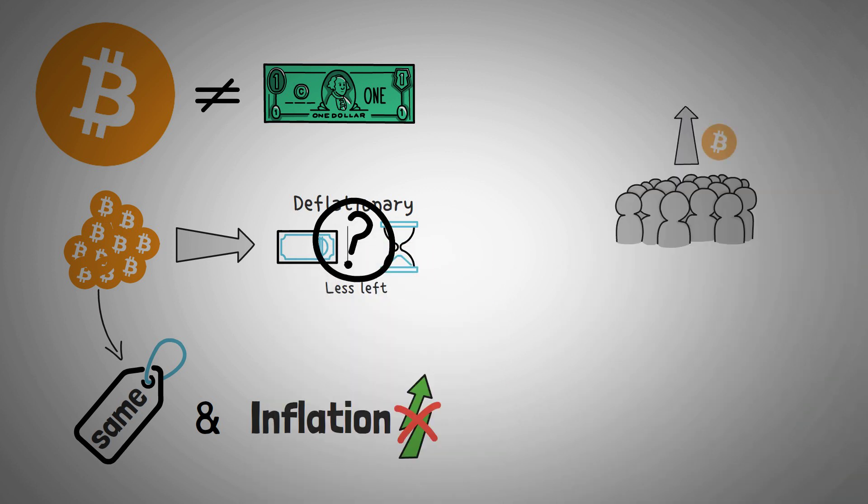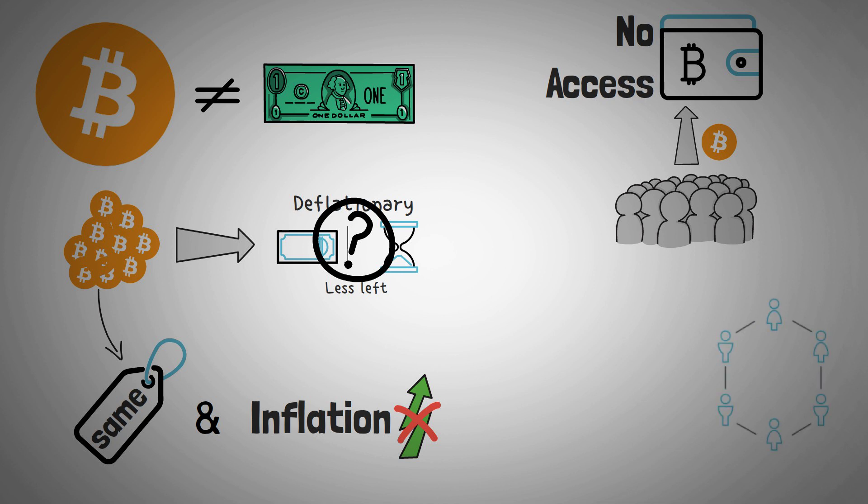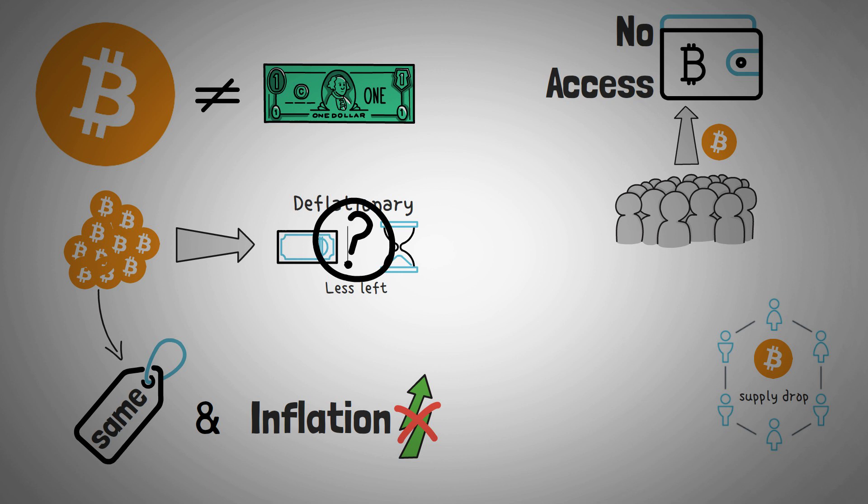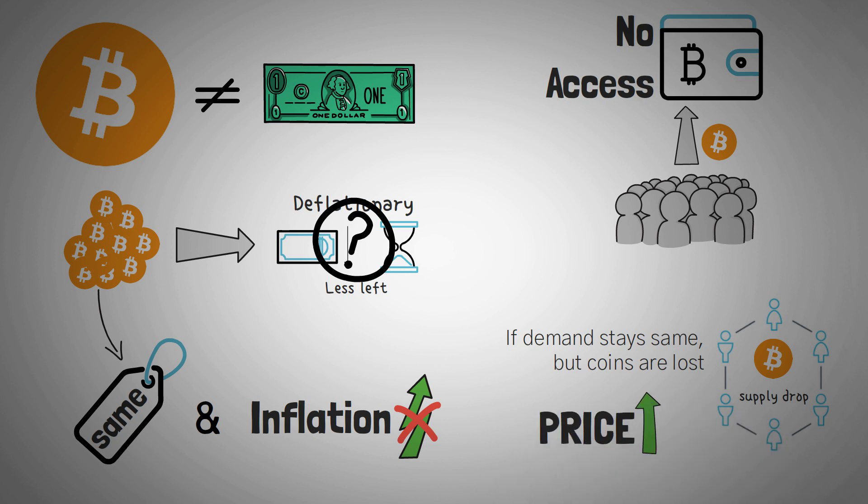Because people will probably accidentally send Bitcoin to wallets that they do not have access to, meaning that the total circulating supply of Bitcoin will drop. And due to this, and due to the law of supply and demand, if demand stays the same, but more Bitcoin is lost each year than the amount that is mined, the price should increase.